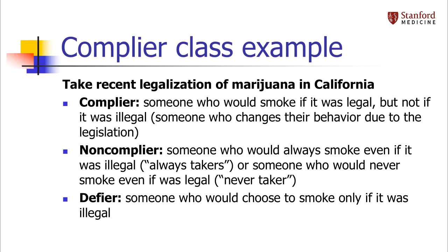Non-compliers are those who are unaffected by the legislation. They either smoked when it was illegal and will continue to do so — always-takers — or they didn't smoke when it was illegal and they still won't smoke now that it's legal — never-takers. Defiers would be those who smoked when it was illegal but won't smoke now that it's legal. This is likely a rare case, but I guess it could exist.